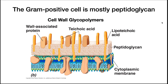While both gram-positive and gram-negative cells have peptidoglycan, the rest of their cell wall structure is very different. The gram-positive cell is mostly peptidoglycan — it has dozens of layers of peptidoglycan polymer stacked into a thick mesh. Teichoic acid and lipoteichoic acid hold these layers together, with the latter anchoring peptidoglycan to the cytoplasmic membrane. The peptidoglycan will also have proteins embedded within it.